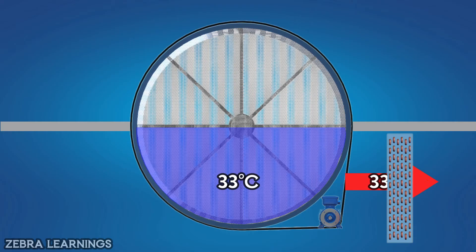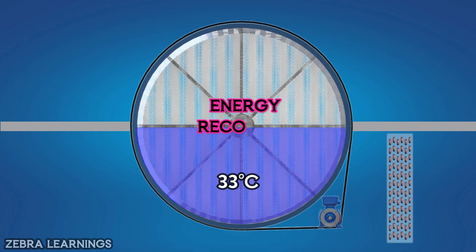The air exiting the thermal wheel is further cooled as it travels through the cooling coil. Before traveling through the cooling coil, the temperature of the air is reduced by the thermal wheel. That's why we call the thermal wheel the energy recovery wheel.